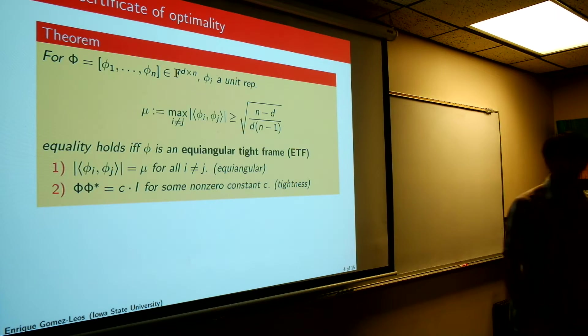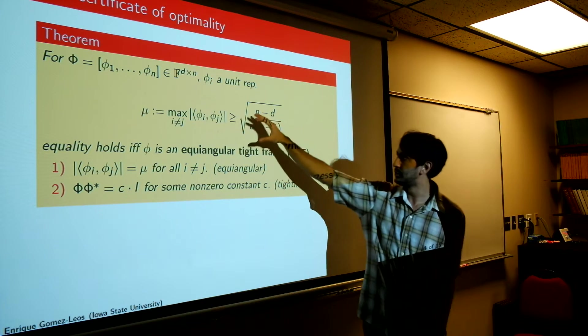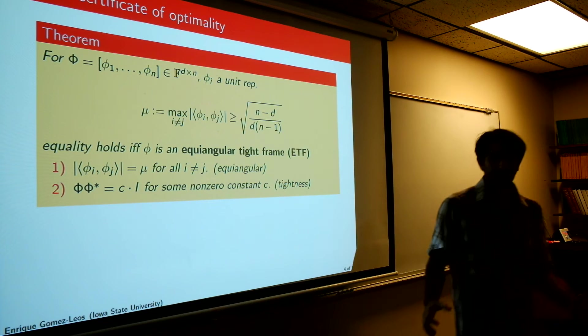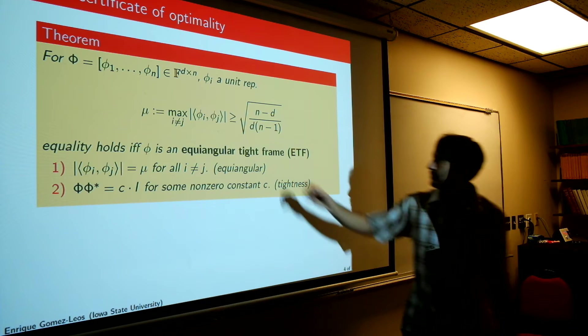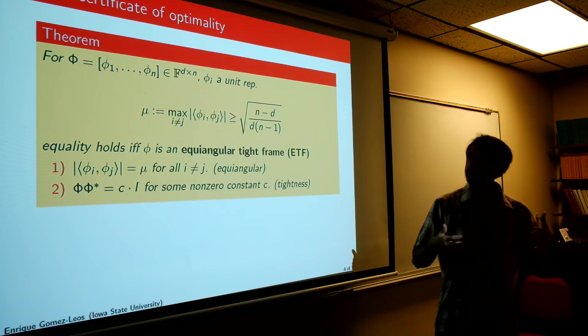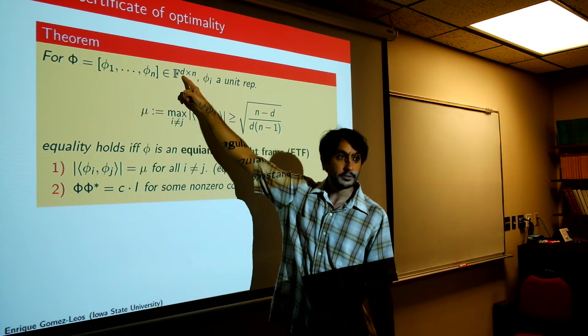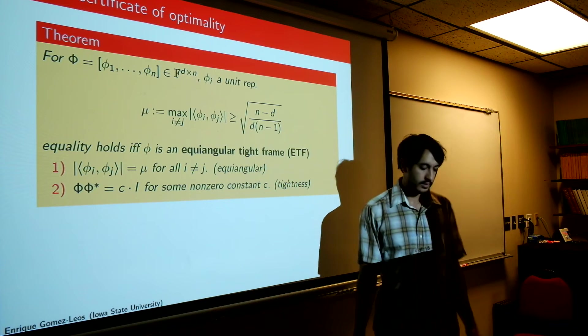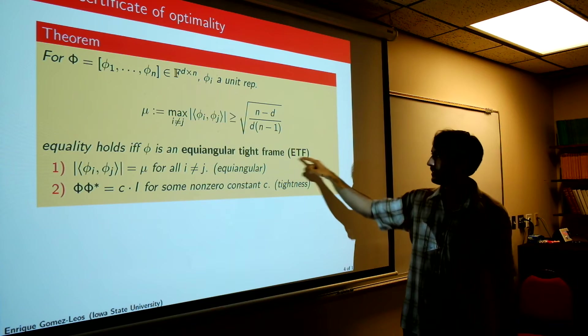So we have a nice theorem by Welch, this is the Welch bound. The purpose of this slide is not to show you that this is a number that can be achieved in the best case scenario, but rather we are interested in when we can actually achieve this bound. When do we actually saturate this inequality? So we're concerned in those arrangements of lines for which we can find actual phi 1 through phi n in some d-dimensional space for which the angle is exactly this number here. So when this happens it's important enough that we call it an ETF, an Equiangular Tight Frame.